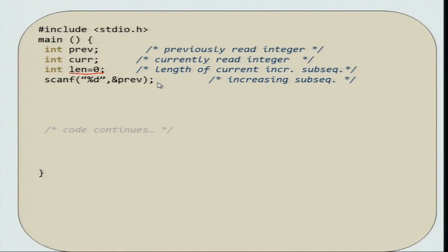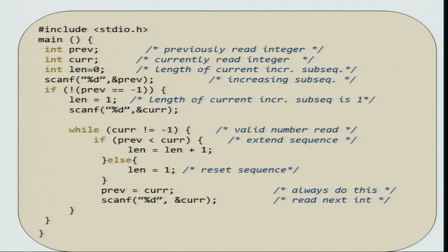Once we declare these three variables, let us say that we scan the first variable into previous. Now, let us focus on the main body of the program. If the currently read number is not minus 1, then you say that you start with length 1. The length of the current increasing subsequence is 1, and then you scan the next number into CURR. This part of the code is just to initialize.